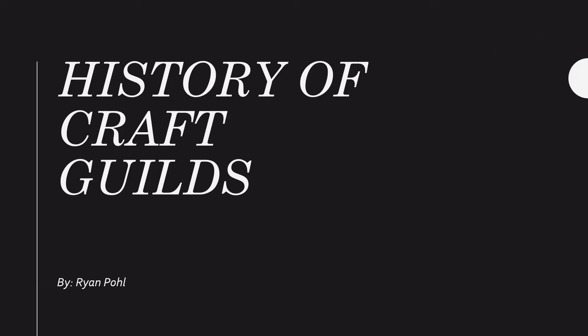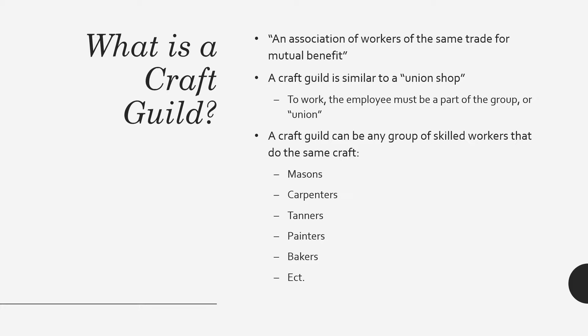Today we're going to be talking about the history of craft guilds. A craft guild is an association of workers of the same trade for mutual benefit. A craft guild is very similar to today's union shops — to work, the employee must be part of the group or union. A craft guild can be any group of skilled workers that do the same craft, like masons, carpenters, tanners, painters, and bakers.